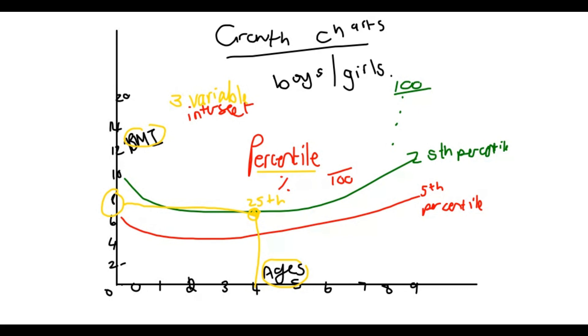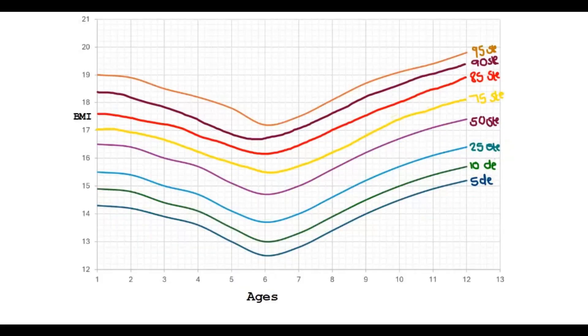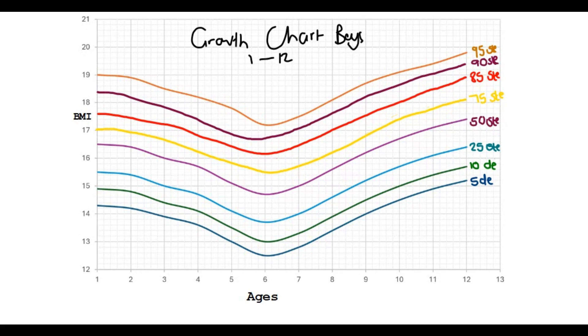So, that was just the intro. This is what an actual growth chart looks like. And in our example, we are going to look specifically at boys. And the ages here, you can see it's like 1 to 12 years or 13 years. And we have many, many percentile curves here. The 5th, 10th, etc., 95th. And we have the BMI values on the side.